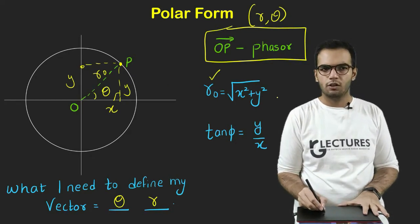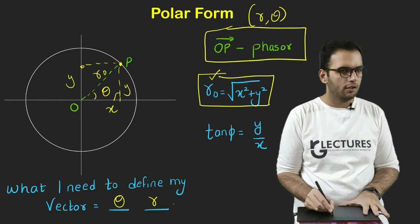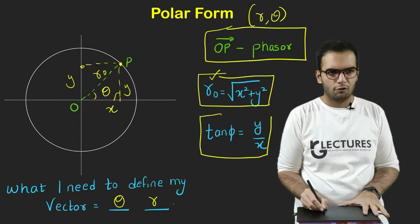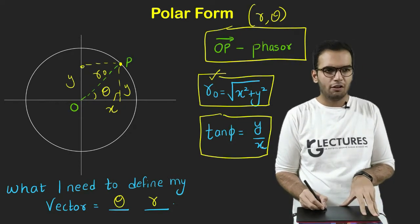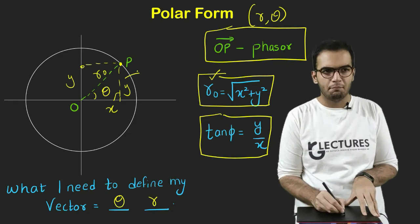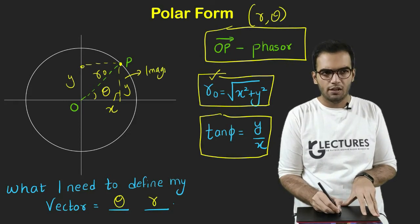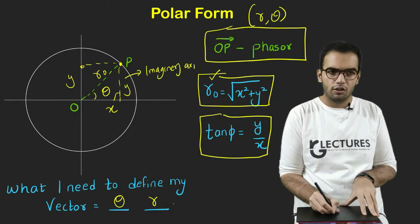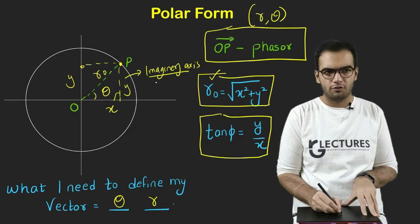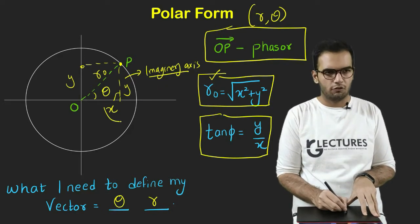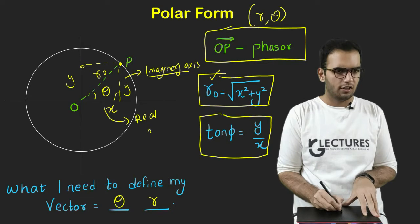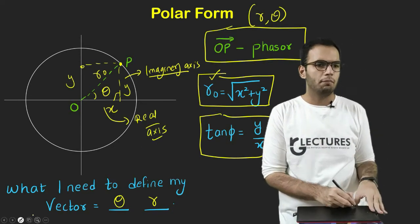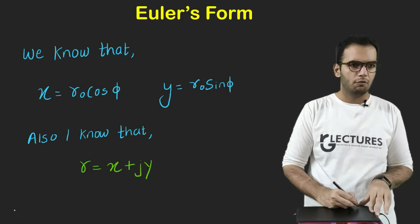So apply Pythagoras theorem. You will get R0 is equals to the root of X square plus Y square. You want to find the angle, apply tan of θ equals Y by X, also referred to as the imaginary axis upon real axis. Y is always the imaginary axis in complex number and X is considered as real axis. So in this way you can use complex numbers in the polar form.